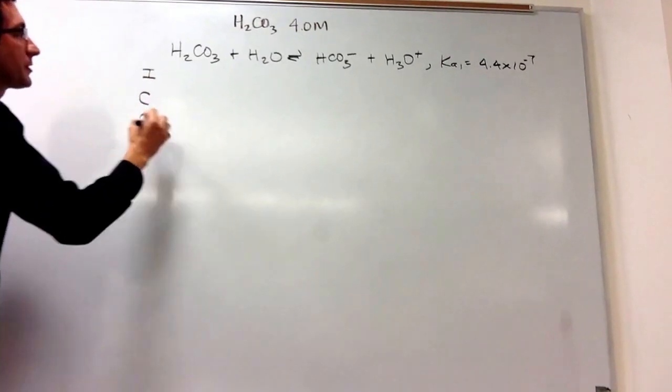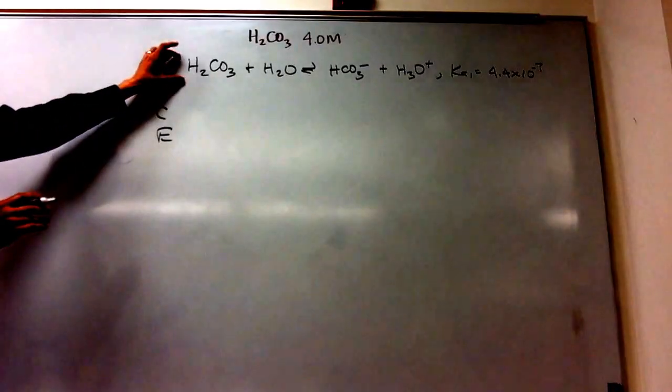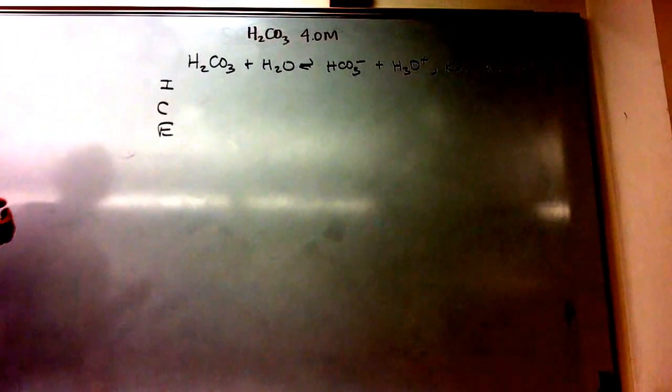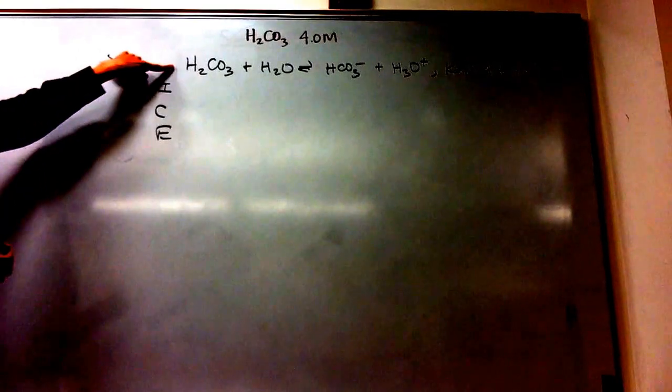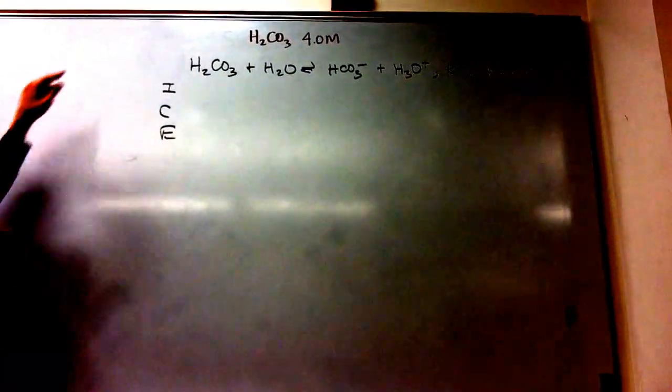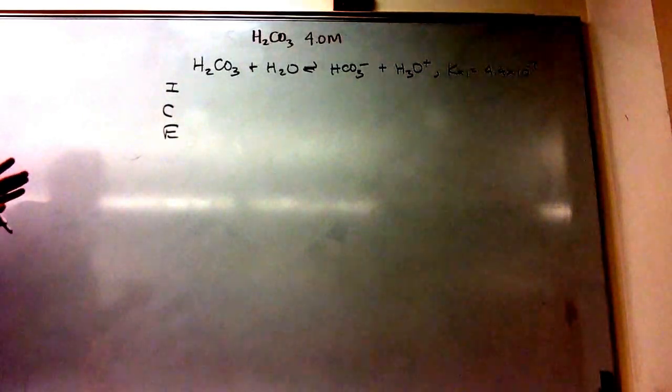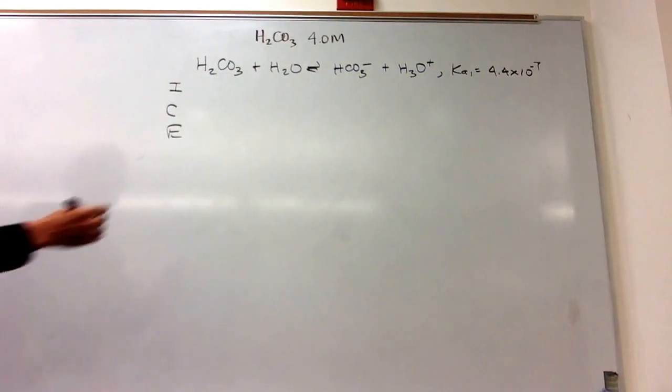Now you should be able to, if you were given this, recognize that's a Ka1 sort of reaction because we have the full neutral polyprotic and it has lost a proton. So that's a Ka1. The next loss of proton would be Ka2, but we won't get to that one quite yet.